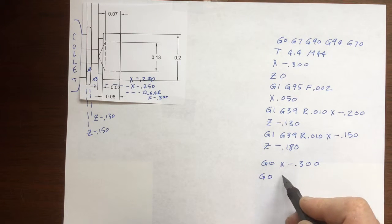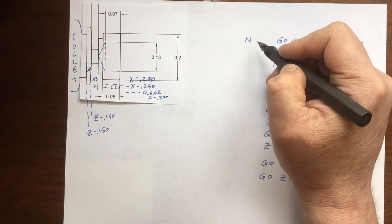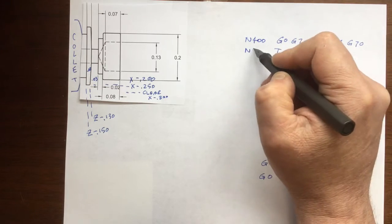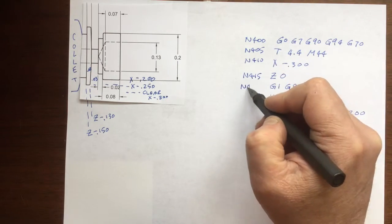Here's another mistake. I usually put an M1 on the last line. Here comes the line numbers. I'm starting at line N400 and incrementing by 5s.